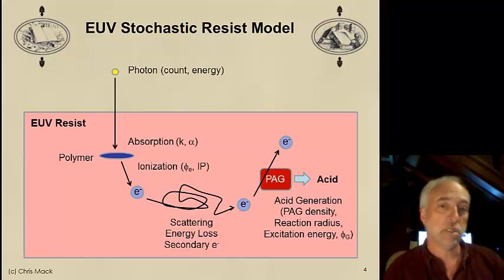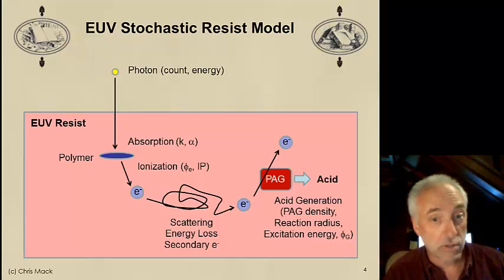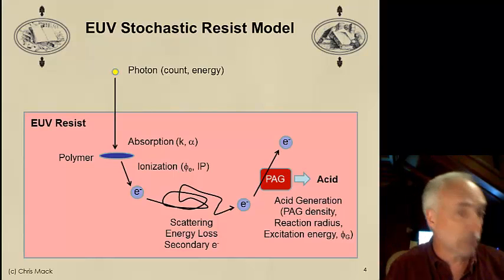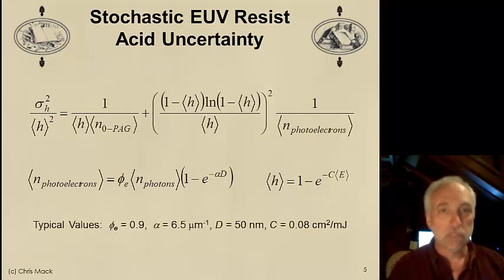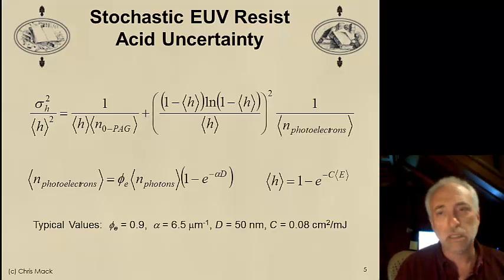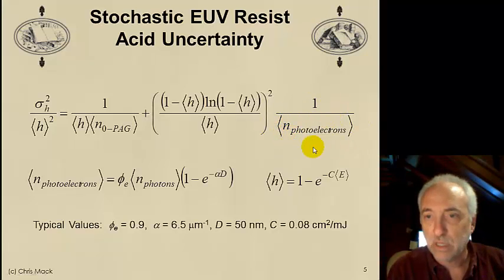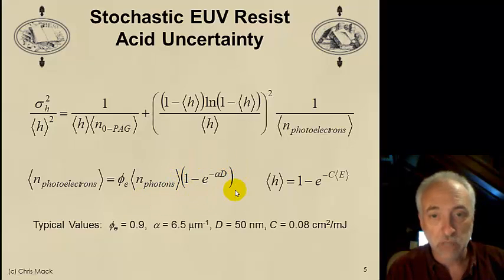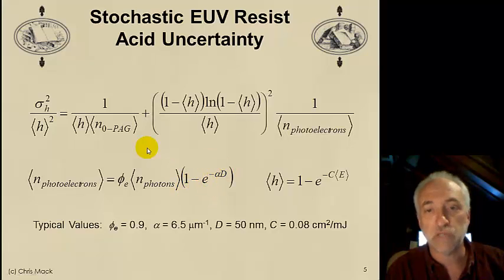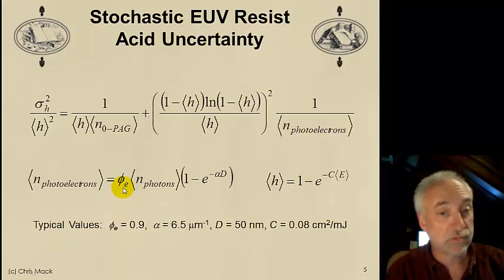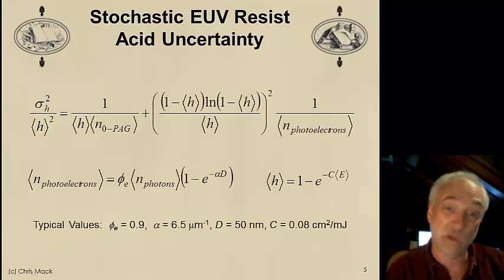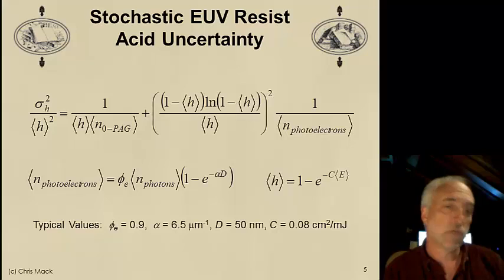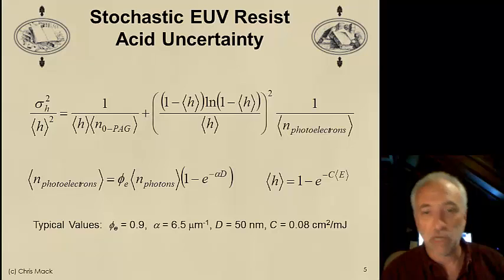There's a certain probability of getting a certain number of photons, a probability of absorption, ionization, and scattering events — all random events — and the resulting acid will have an uncertainty. We work through all the statistics of those interactions and find an equation that looks a lot like before, but now, instead of the number of photons, we have the number of photoelectrons generated. The number of photoelectrons is determined by the number of photons times the fraction absorbed (1 minus e to the minus αd), multiplied by the photoelectron generation efficiency, which is probably close to 1. In many ways this is very similar to the 193 nm resist, but with the added photoelectron generation mechanism.